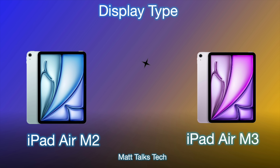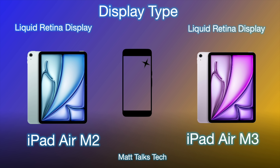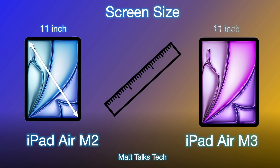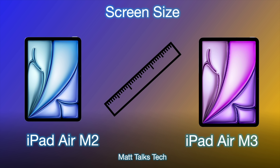Starting with the display type — all four of the iPads have a Liquid Retina display. This is very similar to the display we got with the iPad from so many years ago, so really the technology behind it hasn't changed that much. Obviously brightness and things like this have improved over those years, but essentially they are exactly the same displays in both of these iPads. For screen size, we have the 11 inch models — exactly the same for both the M2 and M3 — and then the 13 inch models, where the screen size hasn't changed whatsoever either.